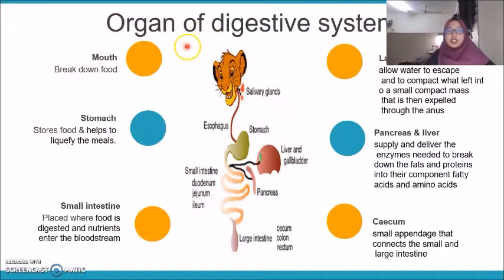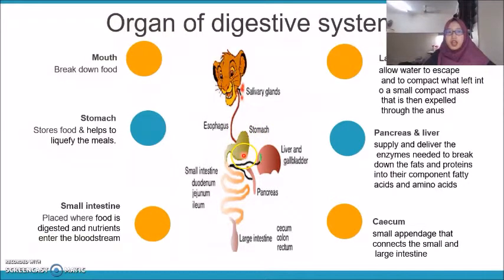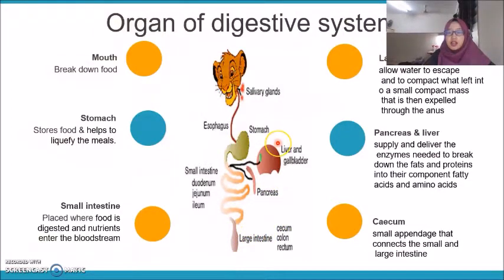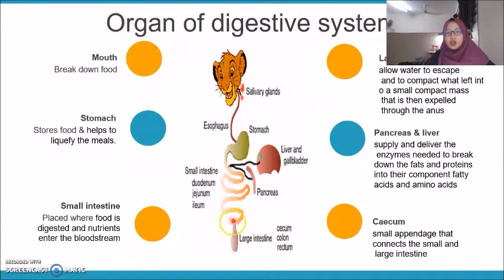These are the organs of the digestive system involved in tiger digestion: mouth, stomach, small intestine, large intestine, cecum, liver, and so forth. The mouth functions in breakdown of food. The stomach stores food and helps to liquefy it. The small intestine is where food is digested and nutrients enter the bloodstream. The large intestine allows water to escape and compacts what is left into a small mass expelled through the anus. The pancreas and liver supply and deliver enzymes to break down fats and proteins into fatty acids and amino acids. The cecum is a small appendage that connects the small intestine and the large intestine.